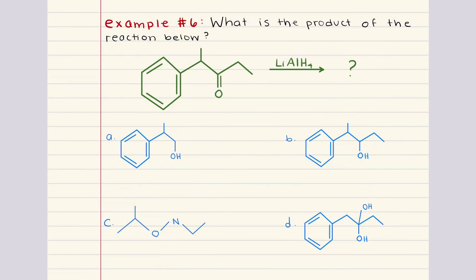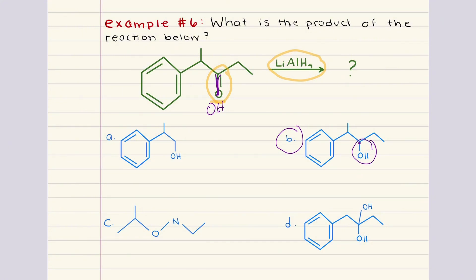Problem six asks what is the product of the reaction below. In this reaction, we start with a ketone being treated with lithium aluminum hydride. Lithium aluminum hydride is a strong reducing agent that converts carbonyl groups into alcohols by adding hydride ions. For ketones treated with this reagent, they are reduced to secondary alcohols — the carbon double bonded to oxygen is converted to a carbon bonded to a hydroxyl group. The answer choice that best matches this is B. None of the other structure is changed in any way, so six is B.